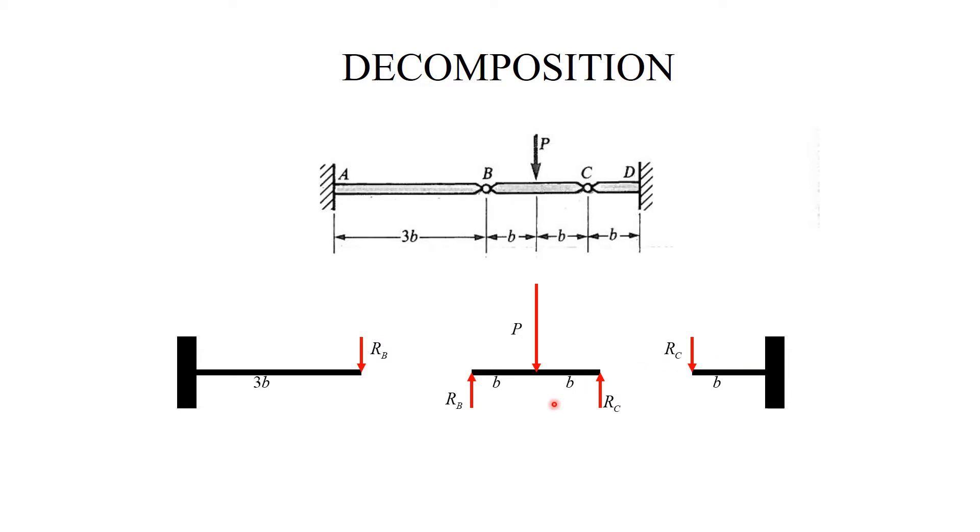Looking at the free body diagram for the middle beam, we conclude that from symmetry, the force P is equally split between RB and RC. It's easy to summarize this result by simply redrawing this cartoon with two forces P/2.